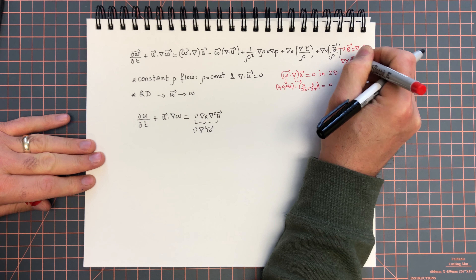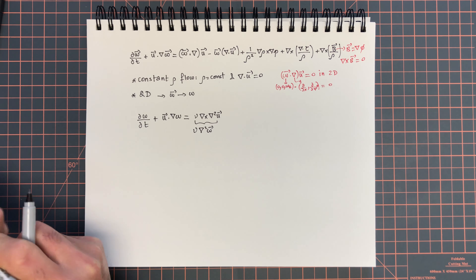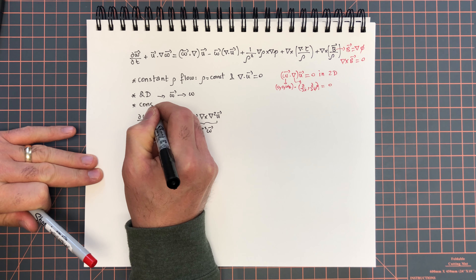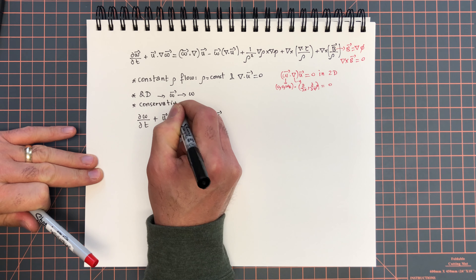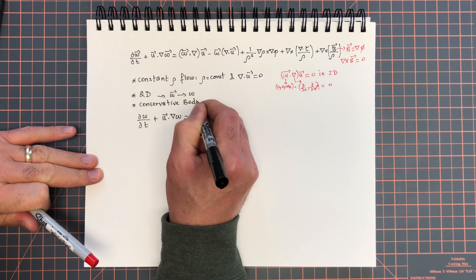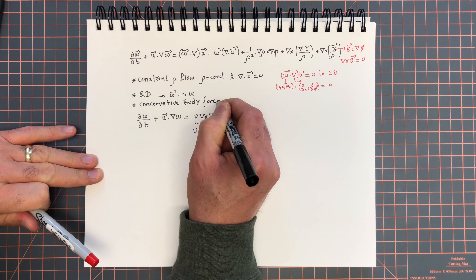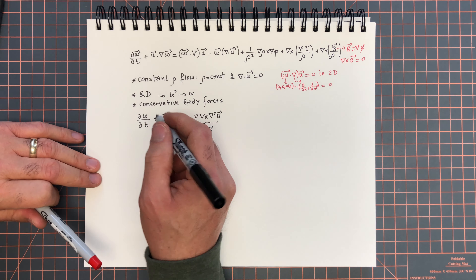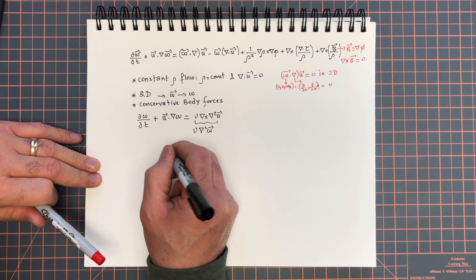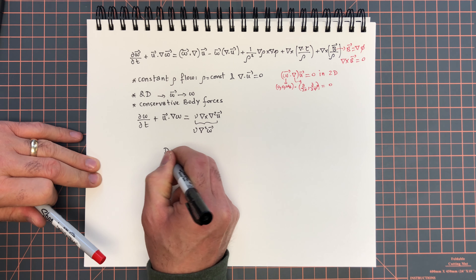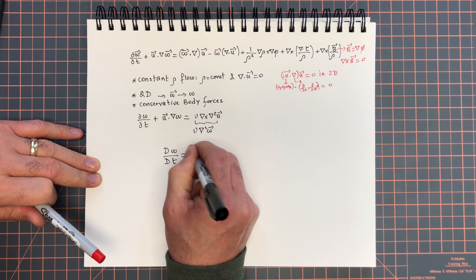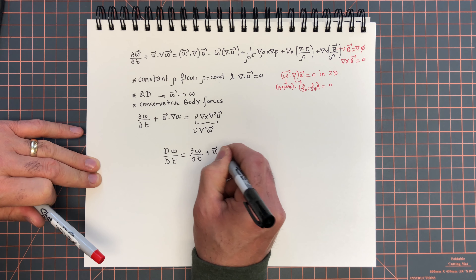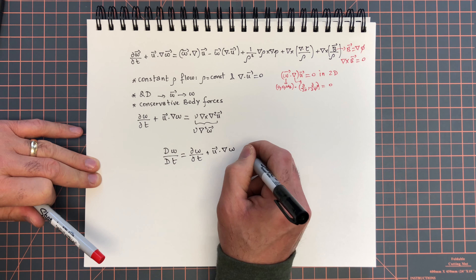So we have nothing from the vortex stretching term. The dilatation term is zero by virtue of div u equals zero. The baroclinic term vanishes because grad rho is zero since rho is constant. For the diffusion term, we assume mu is constant as well, so we get mu over rho, or nu, times curl of del squared u, which simplifies to del squared omega — that is, nu del squared omega.